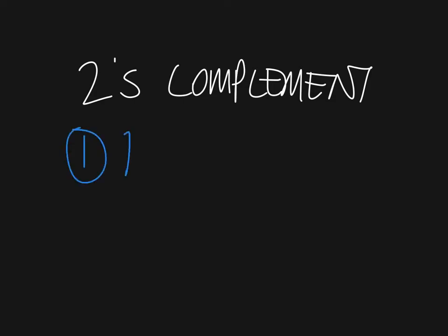So two's complement differs from one's complement in that it's basically made up from two steps. Step one is you find the one's complement of a number.